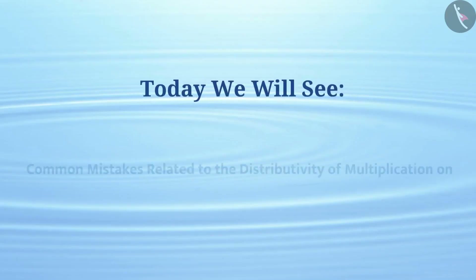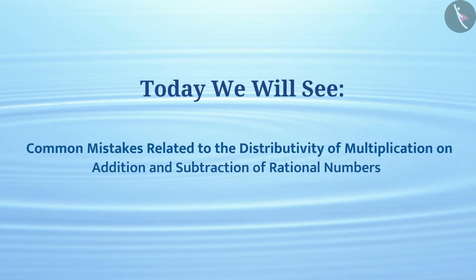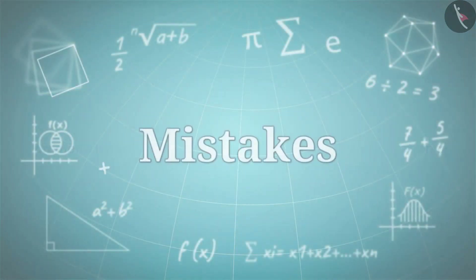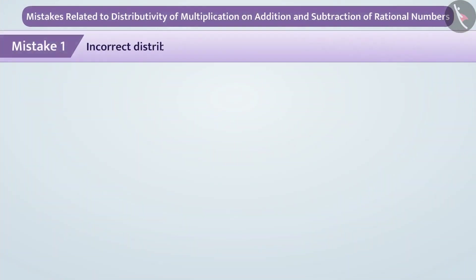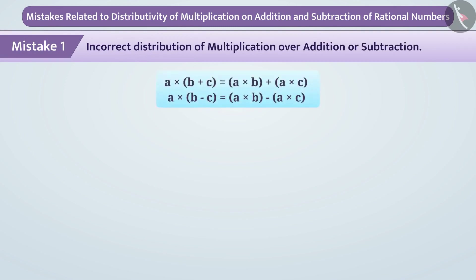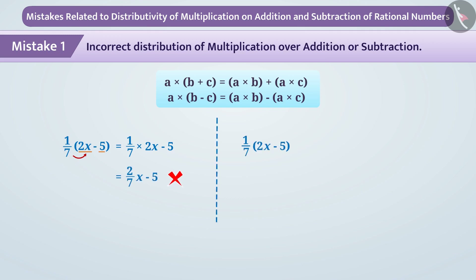Today we will see some common mistakes related to distributivity of multiplication over addition and subtraction of rational numbers. Mistake 1: Incorrect distribution of multiplication over addition or subtraction. Some children often make mistakes while distributing multiplication over addition or subtraction, especially in algebra. For example, when asked to distribute 1/7 into (2x − 5), children write 1/7 × 2x − 5, not multiplying the number outside the bracket with both numbers inside. Remember: the number outside the bracket must be multiplied with all terms inside.